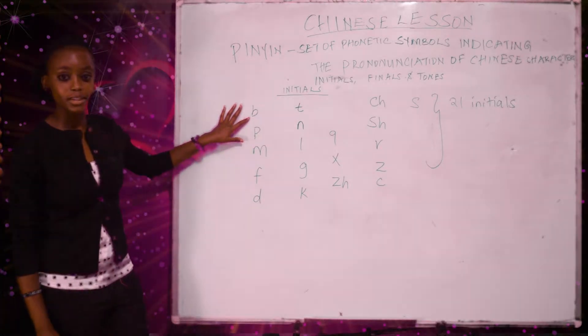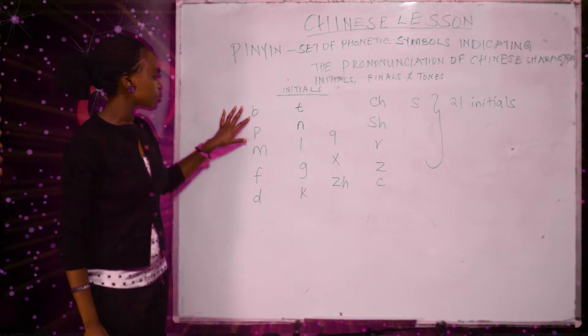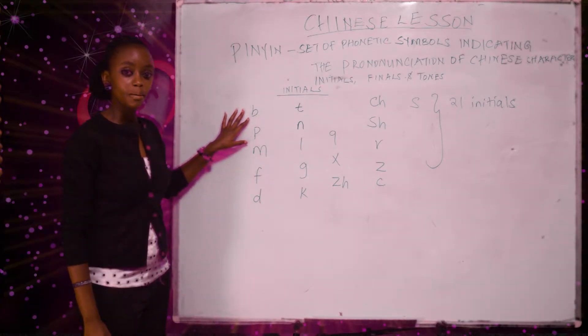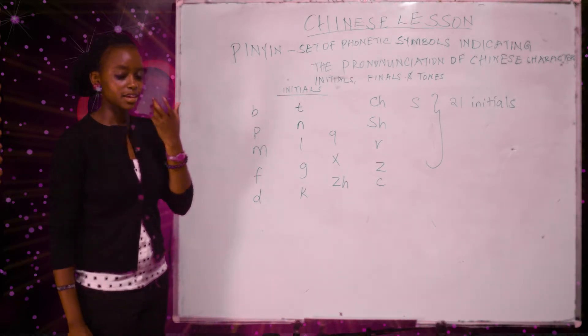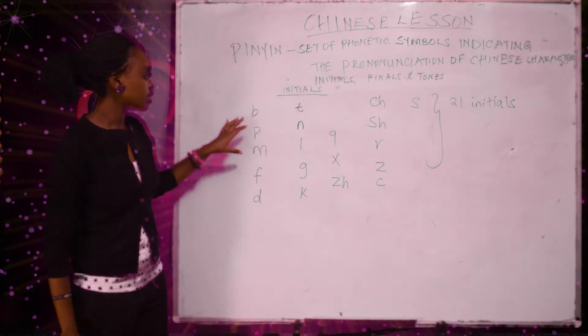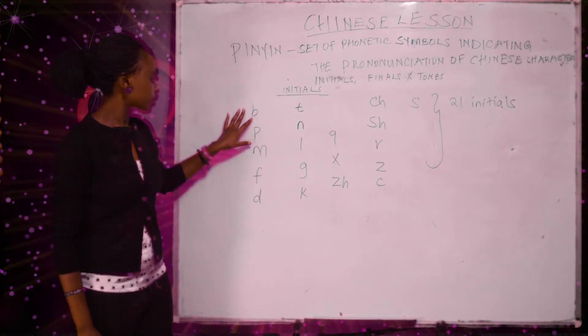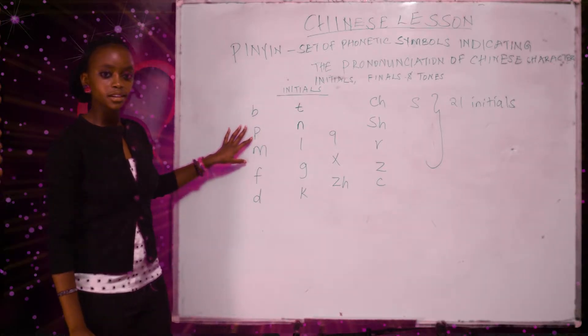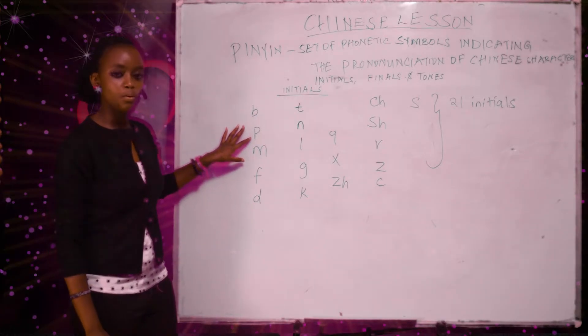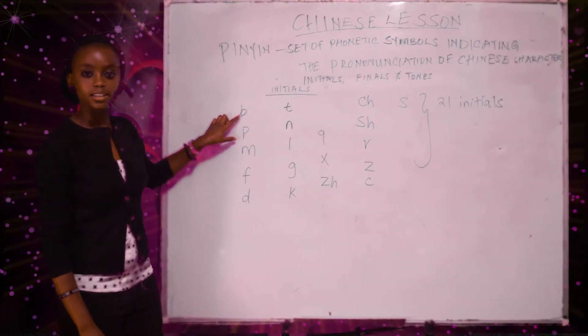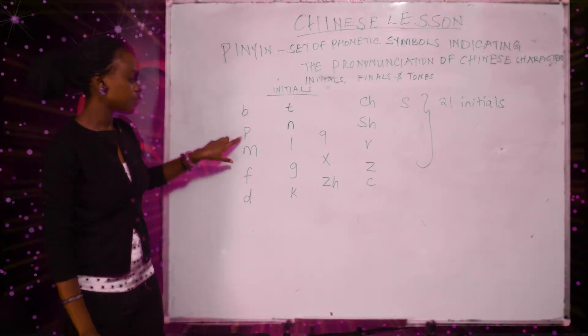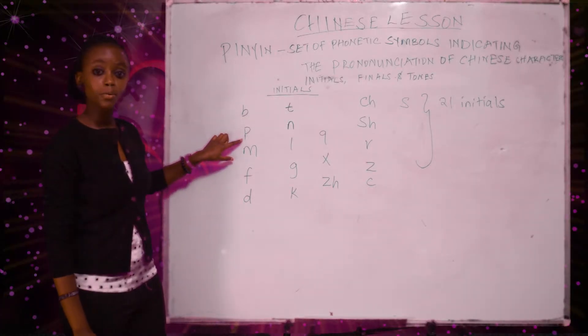We have the B. To pronounce the B you say boor, boor and there has to be a force coming out as you pronounce the B. Same case to P. The pronunciation is puor. The force has to be there. So for B is boor, and for P is puor.